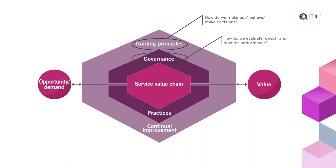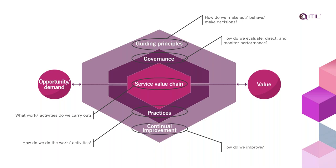Your organization needs governance — a way to evaluate, direct, and monitor performance. A new concept introduced in ITIL 4 is the service value chain, representing the work that we do. Practices represent the resources and procedures we follow to run the service value chain. And last but not least, we have continual improvement — the whole system, from guiding principles down to practices, is subject to continual improvement. We can't implement something and then stay static; we've got to continuously optimize, improve, or even completely change what we're doing in response to internal or external changes.